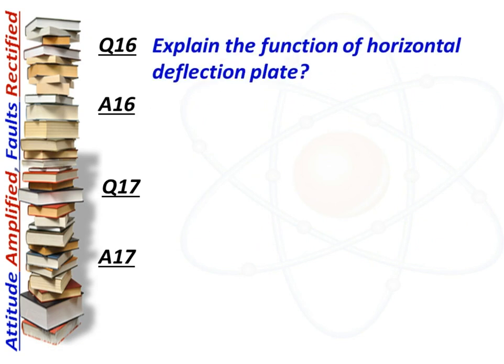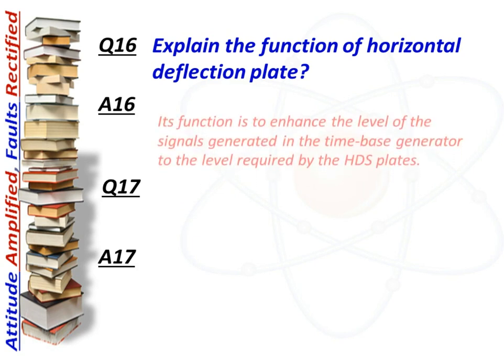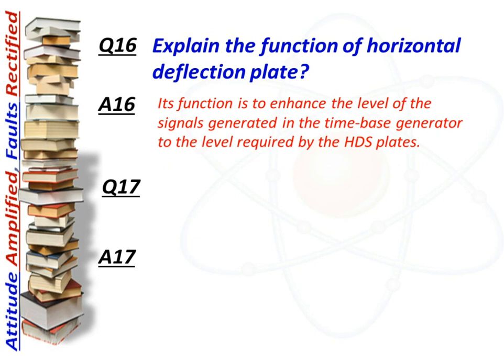Next question: explain the function of the horizontal amplifier. Answer: The function of the horizontal amplifier is to enhance the level of the signals generated in the time-based generator to the level required by the deflection plates.